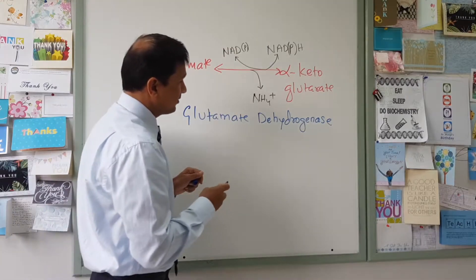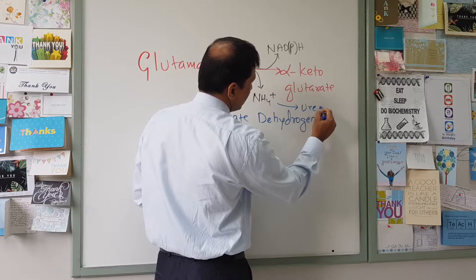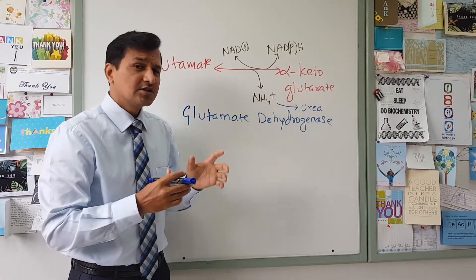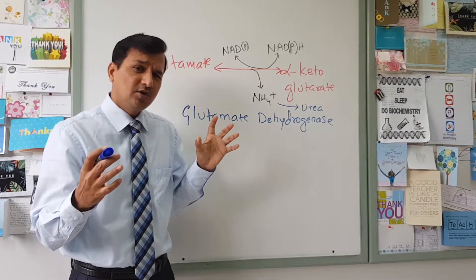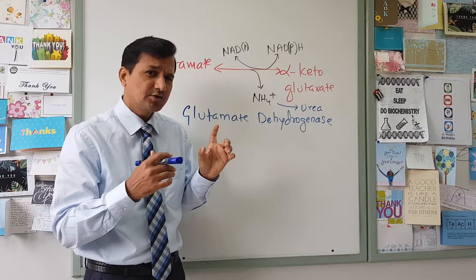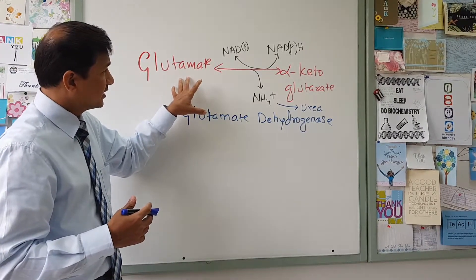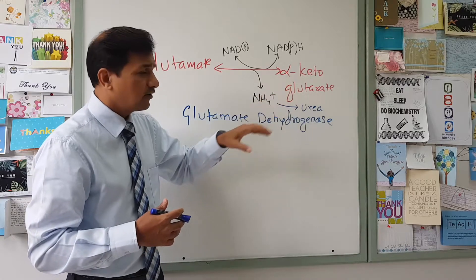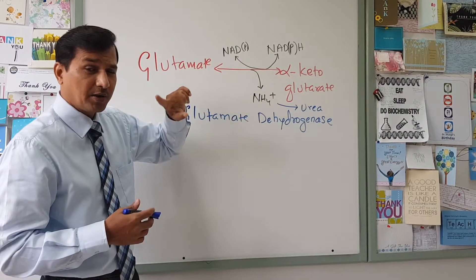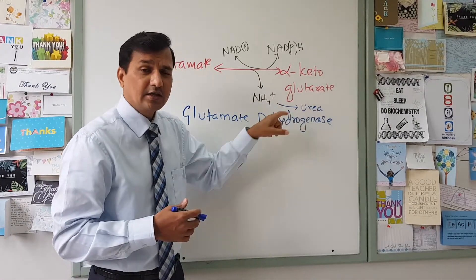What happens to the ammonium ion released in the liver? It is taken into urea formation because the urea cycle is present in the liver. This is how the amino group nitrogen from all amino acids in peripheral tissues travels to the liver in the form of glutamate, gets broken down into alpha-ketoglutarate with ammonium ion release, and that nitrogen is then converted into urea.